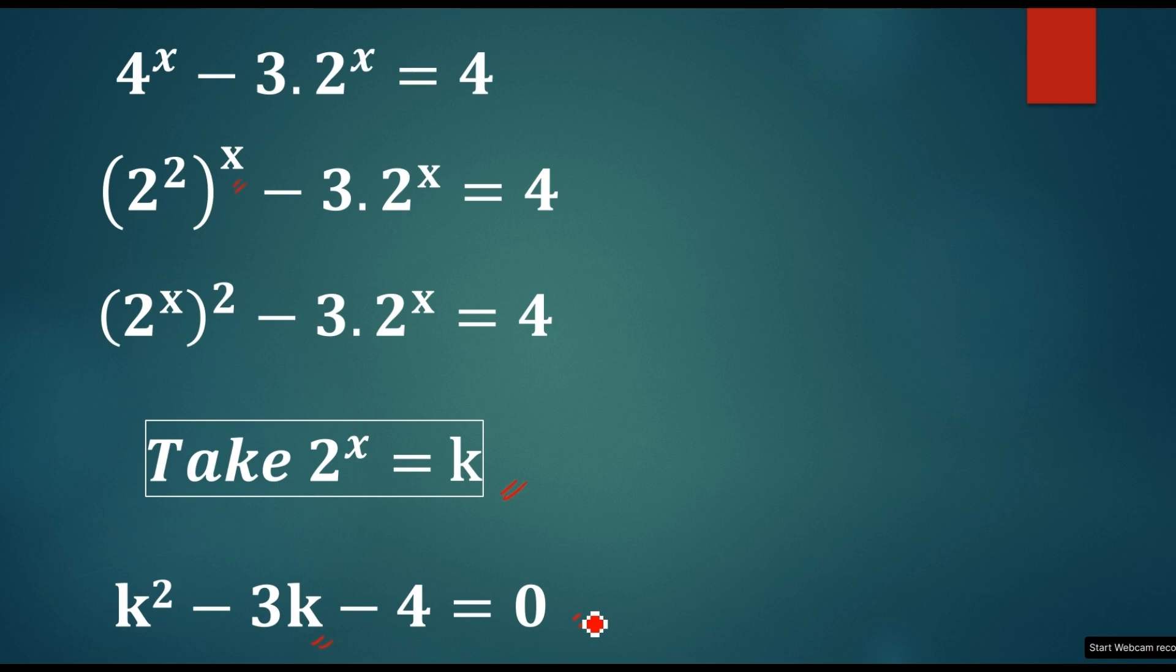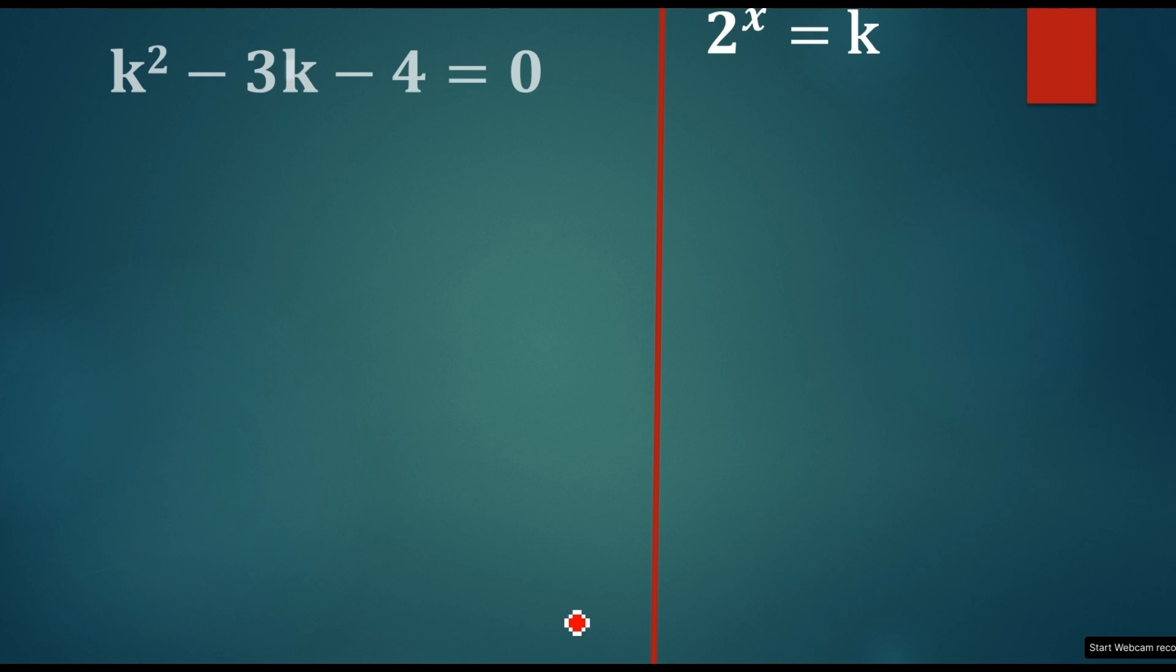Now, we've got a quadratic equation to solve it. How simple it is, you see? Just by taking 2^x is equal to k as another variable, we've got some quadratic equation. So, you know to solve the quadratic equation, right? So, there are methods to solve by using the formula method or factorization method.